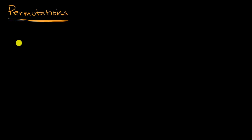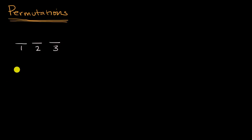My sofa can seat exactly three people. I have seat number one on the left of the sofa, seat number two in the middle of the sofa, and seat number three on the right of the sofa. And we're going to have three people who are going to sit in these three seats: person A, person B, and person C. How many different ways can these three people sit in these three seats?